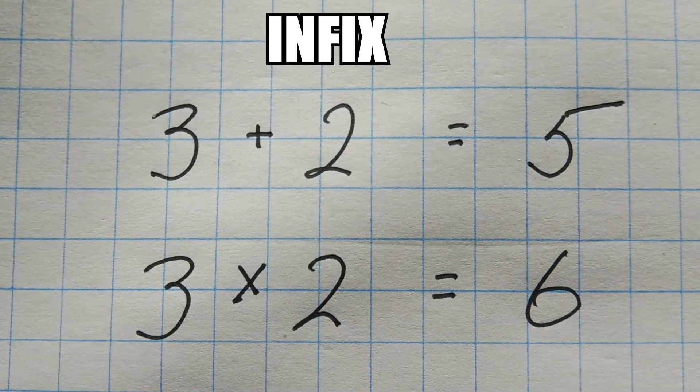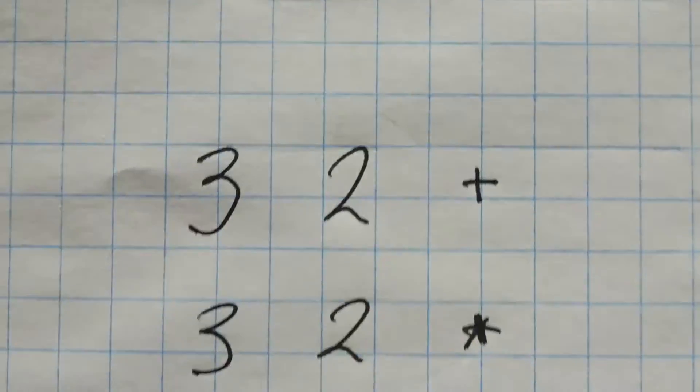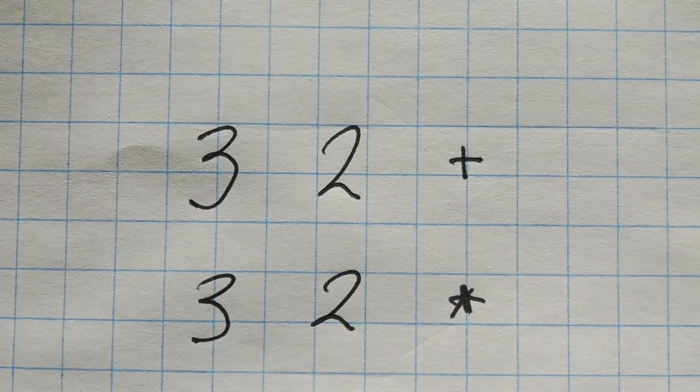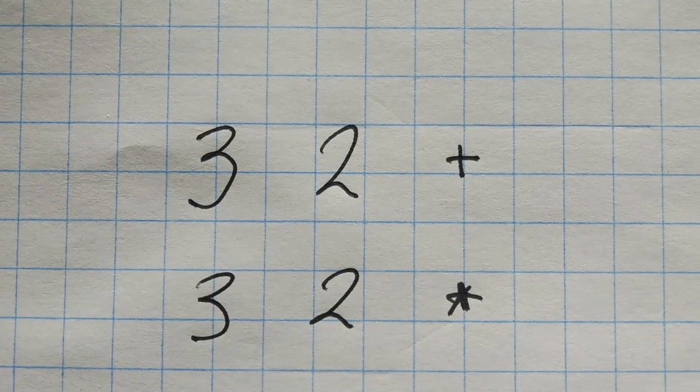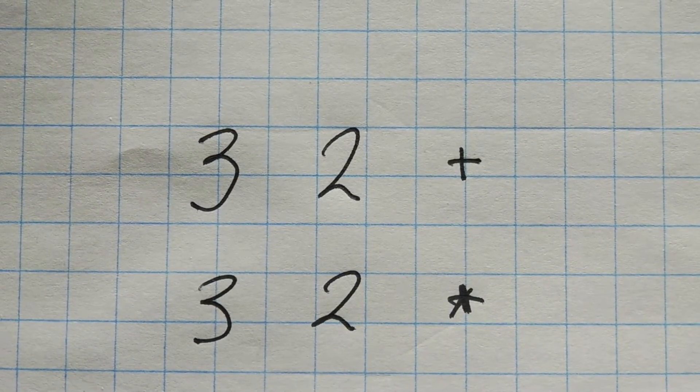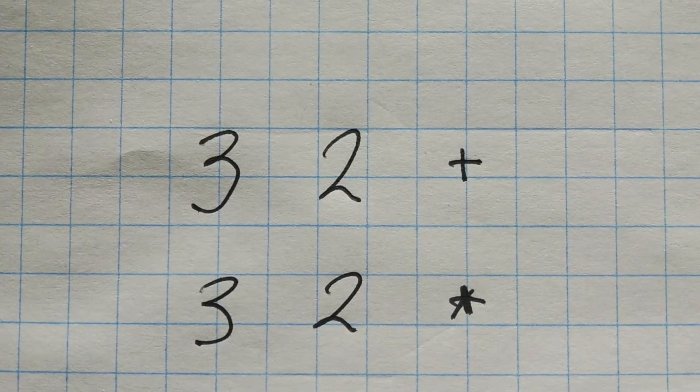Now if you wanted to do this in reverse Polish notation, which is postfix, it would look like this: it would be 3 then 2 then plus, which would give us 5, or 3 then 2 then multiply, which would give us 6. Now this looks strange because you're so used to infix notation back in elementary school and you'd be using that all your life.